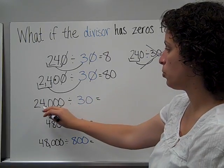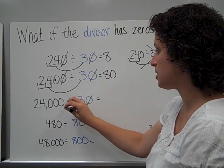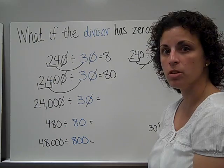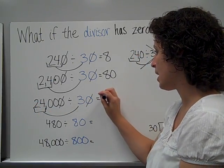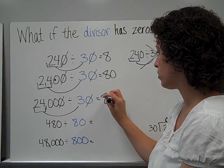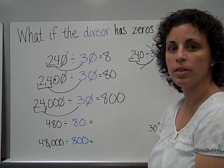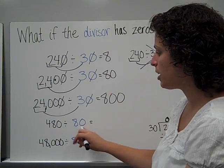Again, 24,000 divided by 30. I'm going to take away the zeros in the matching place values. Now I've got 24 divided by 3 is 8. One, two zeros this time. That should be added to the quotient.